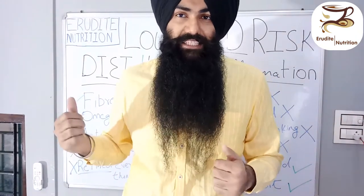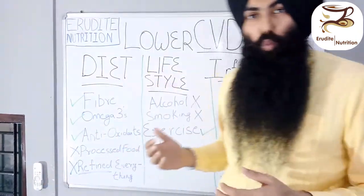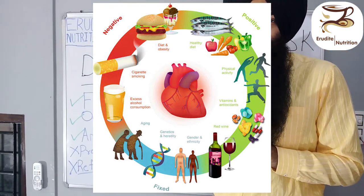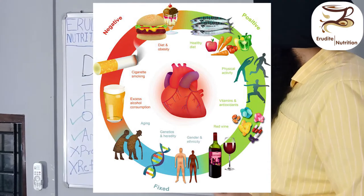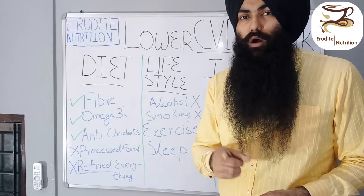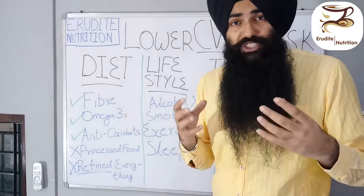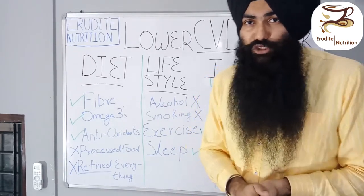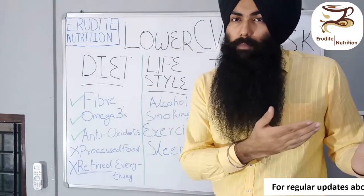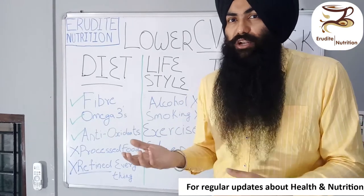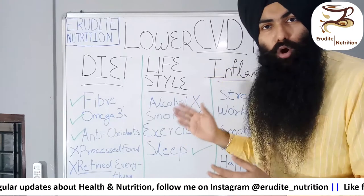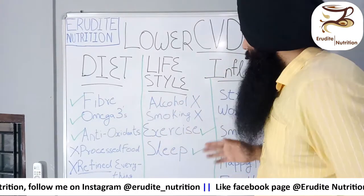Now let's move on to the second column: lifestyle changes to decrease cardiovascular disease risk. Number one: quit alcohol. Alcohol is one of the major factors which increases the risk of cardiovascular accidents and diseases, so we have to quit alcohol as soon as possible. I'm not talking about going from regular to occasional drinker — if you want to make changes in your life, you have to follow it with discipline. No alcohol, period.